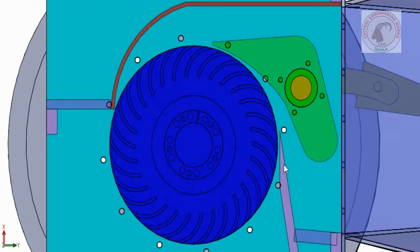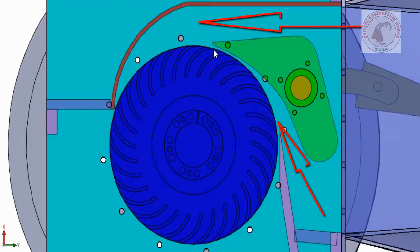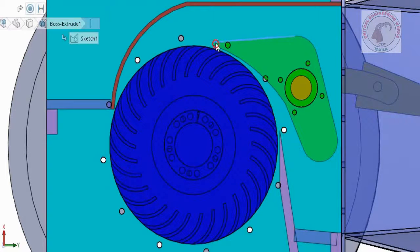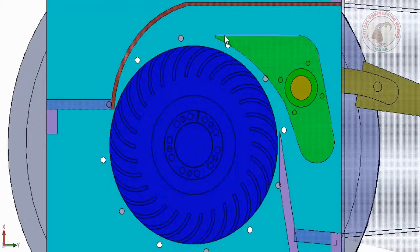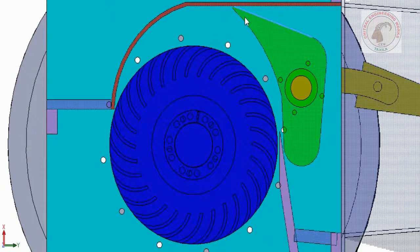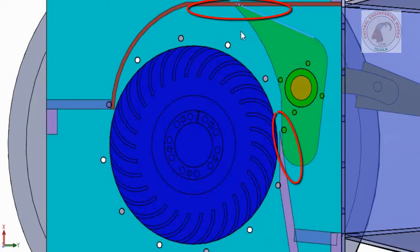At the moment the guide vane is in fully opened position, water enters into the runner from these two ways. Now closing the guide vane to show how water is stopped from being entered into the runner. Both of these points seal the casing.